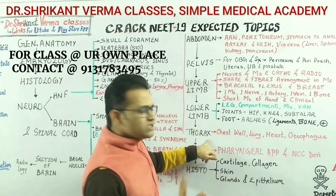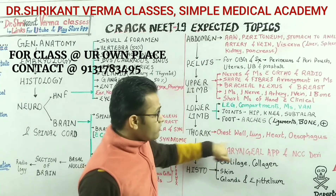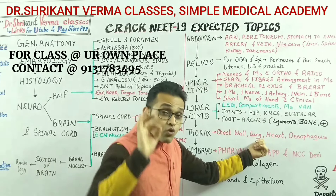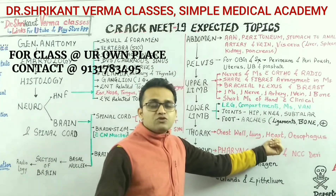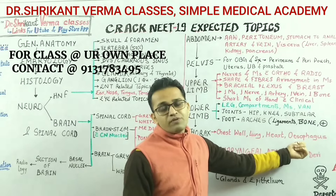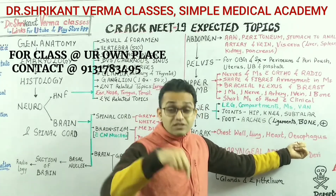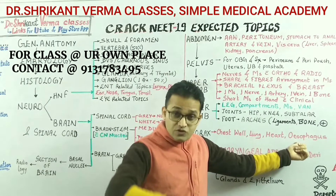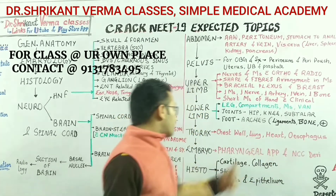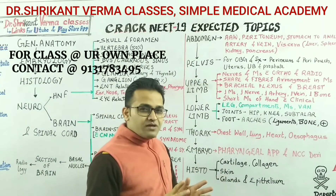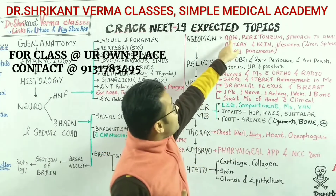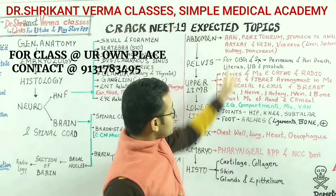Thorax is not too important, but go through the chest wall, lung, heart, and esophagus at least once. In the lung, study the pulmonary hilum and bronchopulmonary segments. For the heart, no excuses — know the arterial as well as venous drainage. Esophagus is a very important topic not only for anatomy but for ENT, surgery, medicine, and physiology — a question from the esophagus has high probability. The chest wall is also important since various thoracic surgeries require going through it.